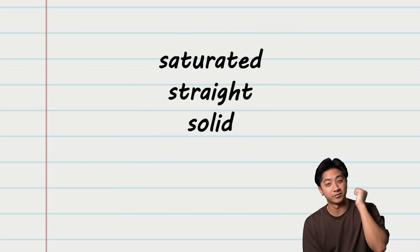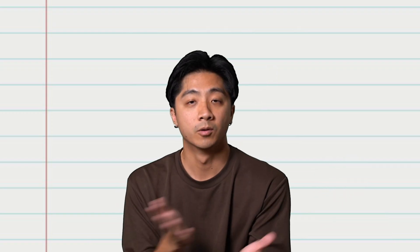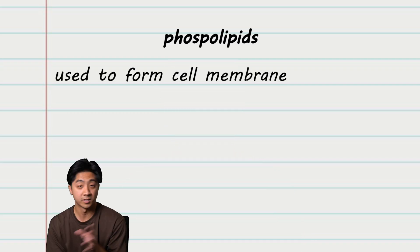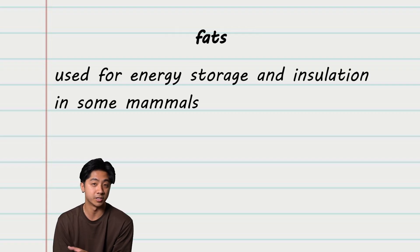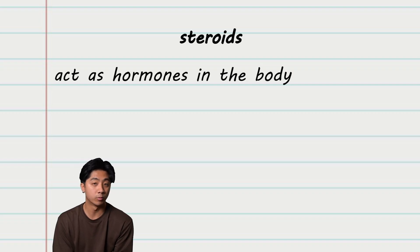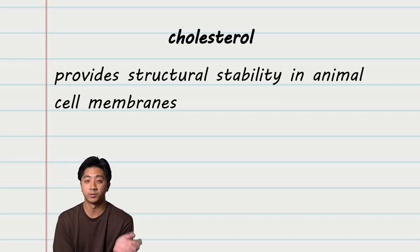Something to help you remember: saturated, straight, solid. So what are lipids for? Well, lipids have a variety of functions in the body. Phospholipids are used to form our cell membrane. Fats are used for energy storage and insulation in some mammals. Steroids act as hormones in the body. And cholesterol provides structural stability in animal cell membranes.